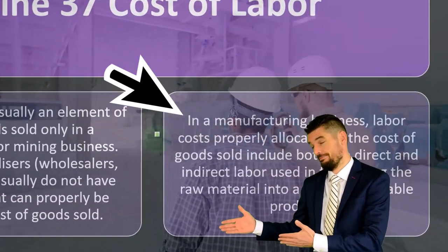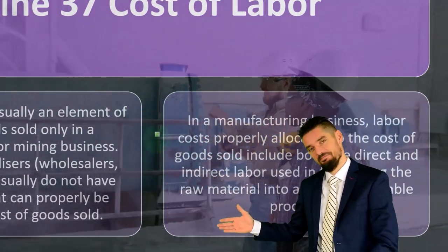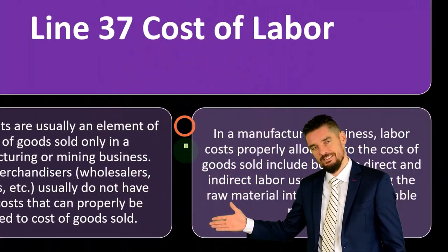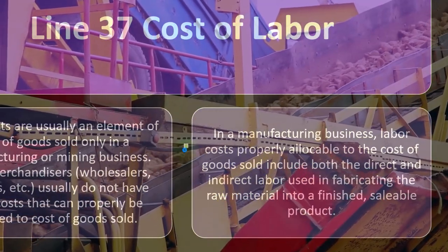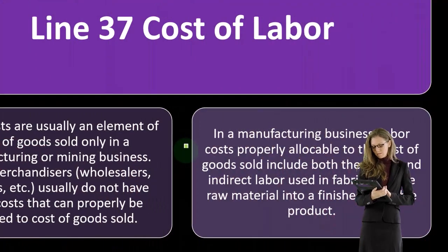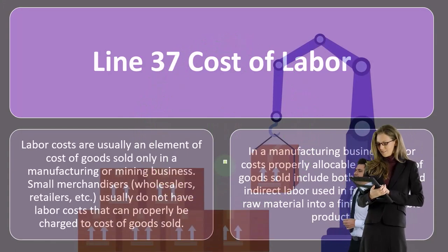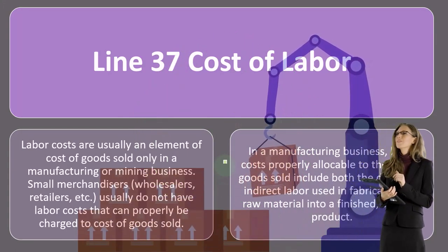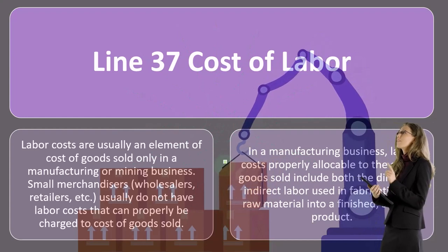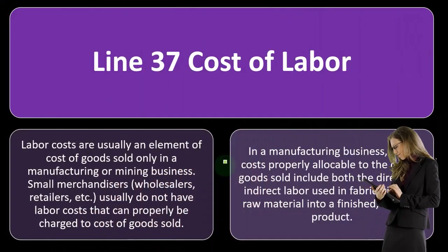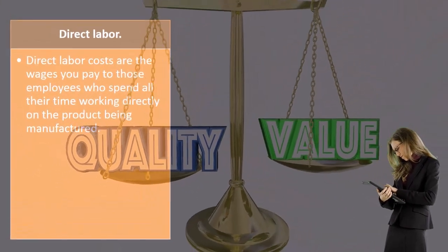In a manufacturing business, labor costs properly allocated to cost of goods sold include both direct and indirect labor used in fabricating raw materials into finished sellable products. Workers directly tied to a specific product are direct laborers. Indirect laborers work in the warehouse contributing to the production process generally. Rather than expensing it as a normal expense, you include it as part of cost of goods sold, expensing it at the point in time the inventory is sold.